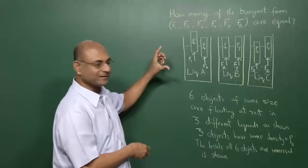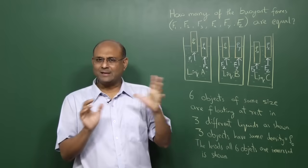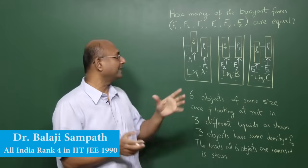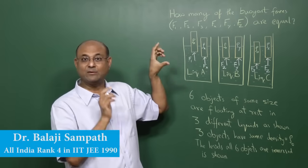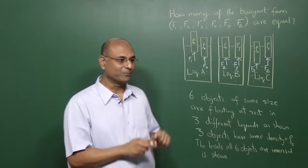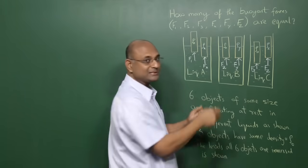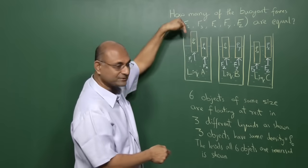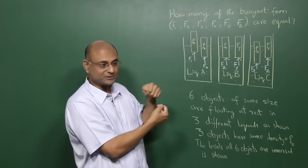This is an interesting question. Basically, it uses only Archimedes' principle and the fact that if an object is at rest in equilibrium, the net forces must be zero. Net forces on it. Every object has two forces acting.